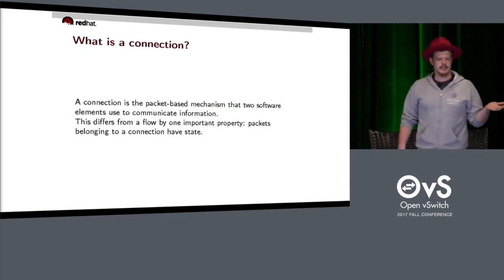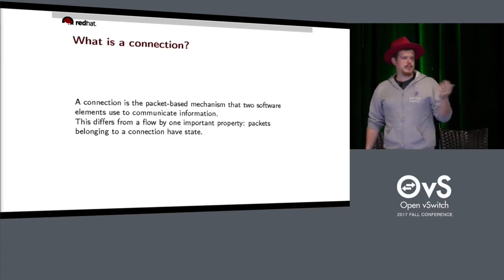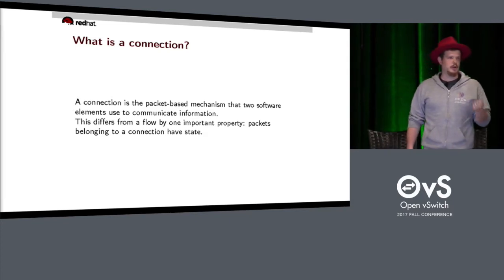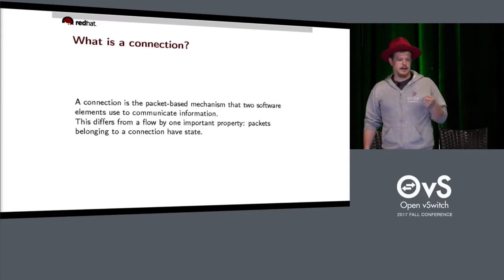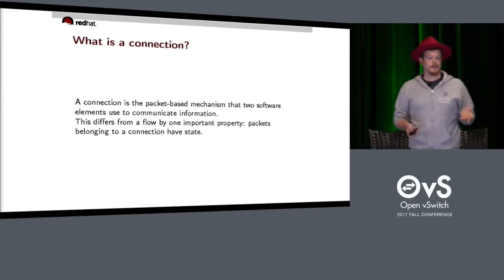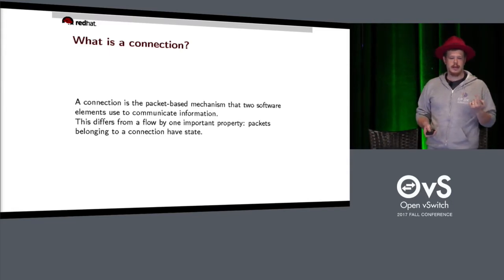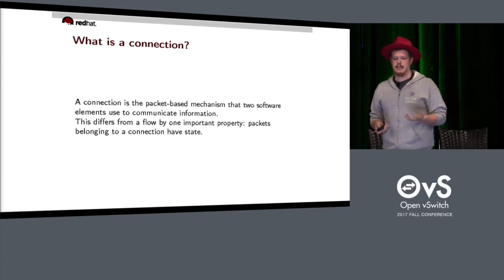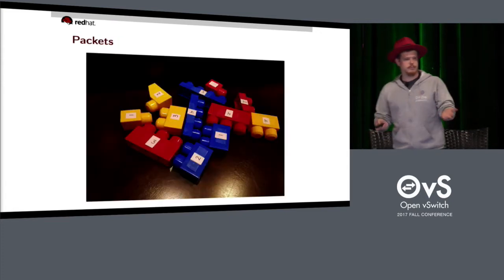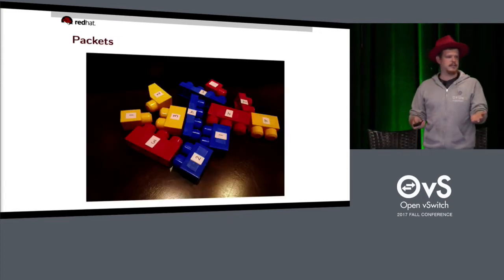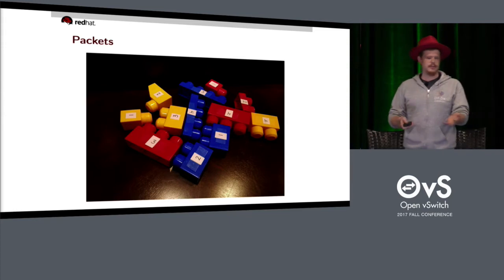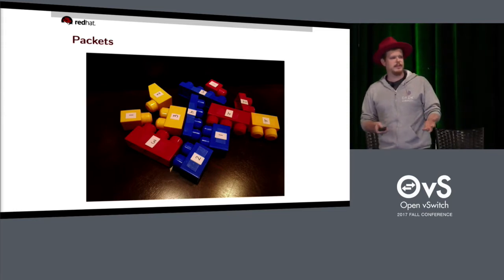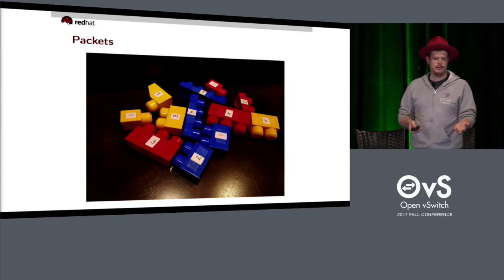What's a connection? A connection is a packet-based mechanism that two software elements use to communicate. It's different from a flow by one important thing: packets that are part of a connection have state. These are packets — they all have some different properties. They have some numbers, like real packets do.